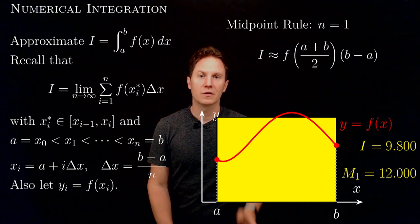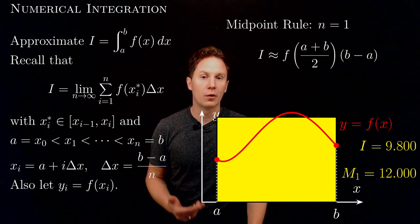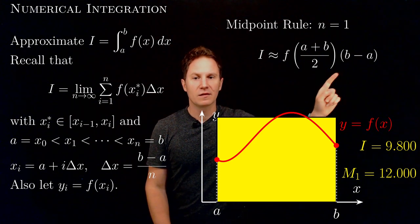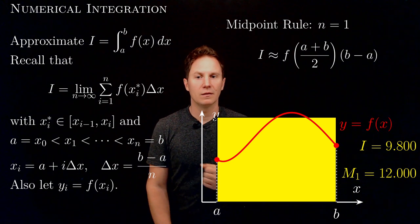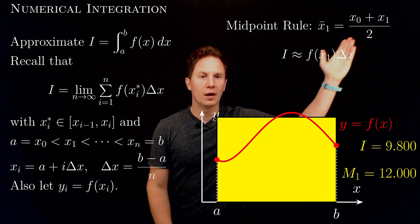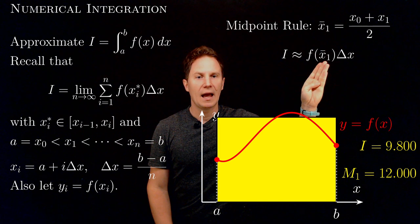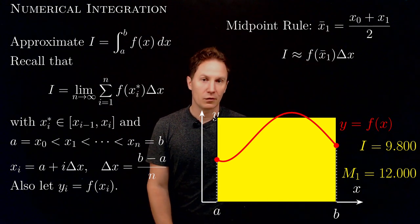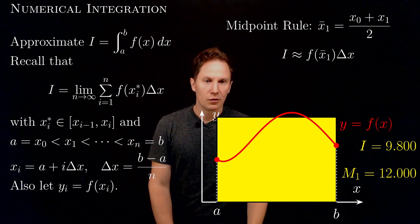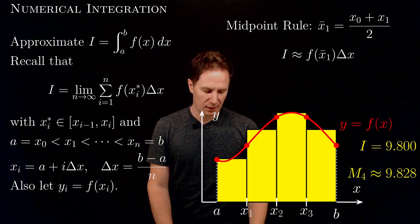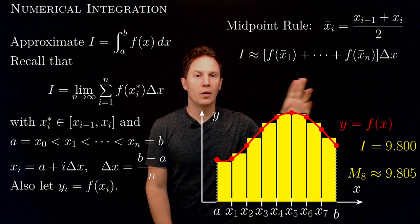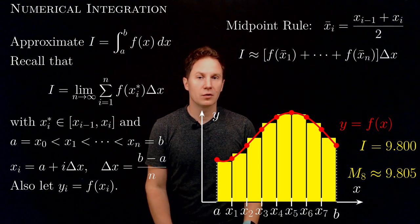This is for just one rectangle. The idea is that we subdivide interval ab into smaller and smaller subintervals to have more and more rectangles. In the simple case n equals 1, we can express the same thing using subdivision points xi and the length delta x: we use the average of the endpoints of each subinterval as the midpoint. As we increase the number of subintervals, we get a better and better approximation. For n subintervals, this formula gives us the midpoint rule approximation.